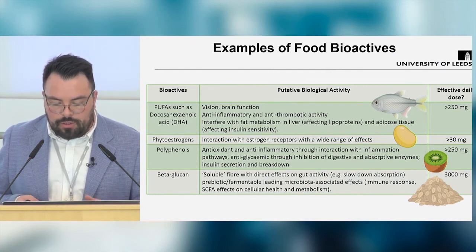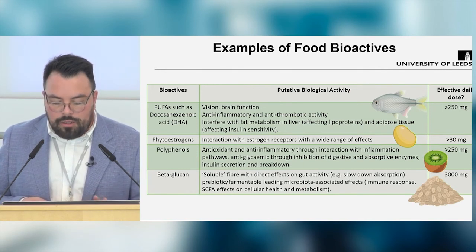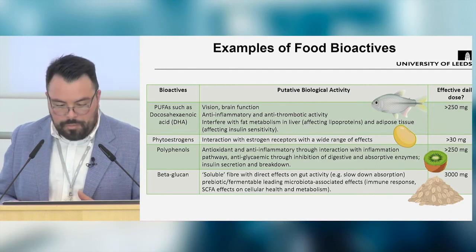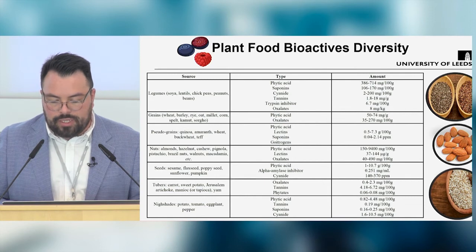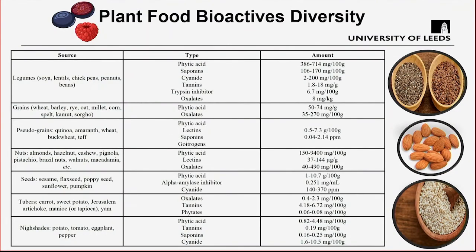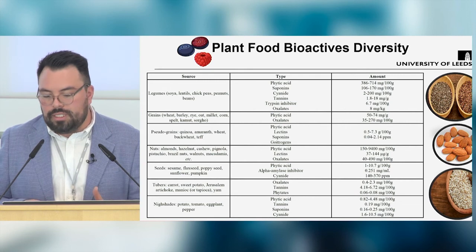There's a boom in plant-based foods, with different plant sources — legumes, grains, cereals, nuts — containing different types of food bioactives: phytic acids, saponins, trypsin inhibitors, oxalates, and others. The amounts will differ because plant food bioactives are secondary metabolites, meaning growing conditions have an impact. Polyphenols are a wide, diverse group of structures, and depending on structure they will be modified during digestion. There's a lot of literature on beneficial effects of polyphenols, but there is still a lot of work to be done.